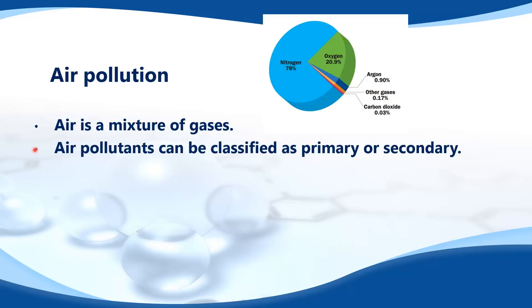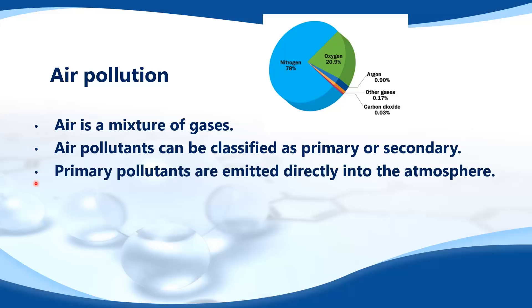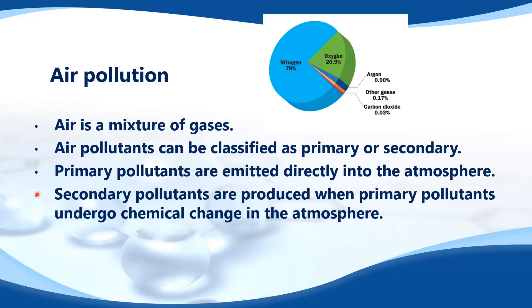Air pollutants can be classified as primary or secondary. Primary pollutants are emitted directly into the atmosphere. Secondary pollutants are produced when primary pollutants undergo chemical change in the atmosphere.